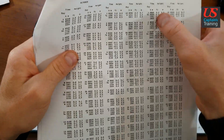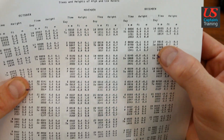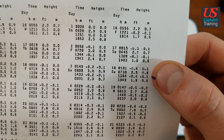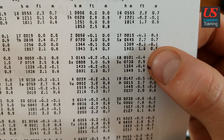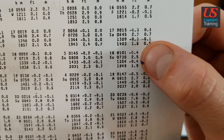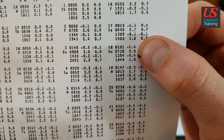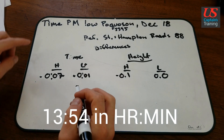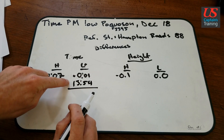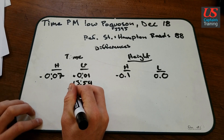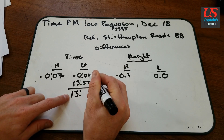First we find December 18 — see the days here. 18 is right over here; it's a Sunday. This is Hampton Roads, so we're looking for PM low. There's AM low, AM high, PM low. 13:54 is the PM low, and negative 0.4 feet. So 13:54 is the PM low, and for the time PM low we're putting the time correction on it: plus 1 minute. So 13:54 plus 1 equals 13:55.